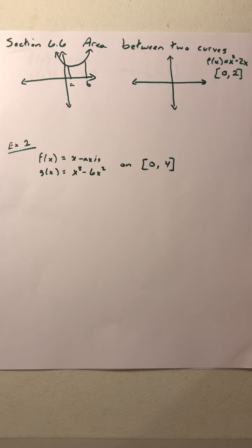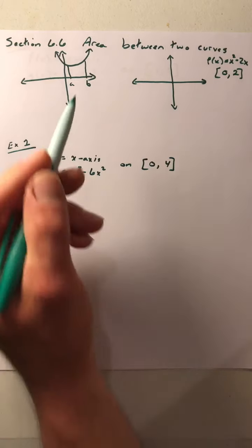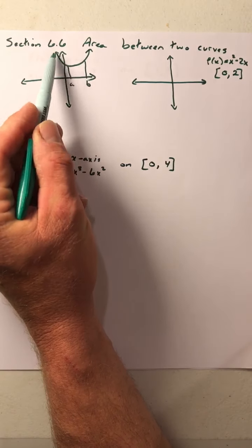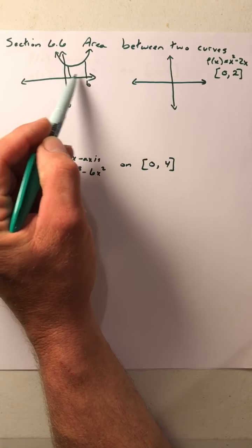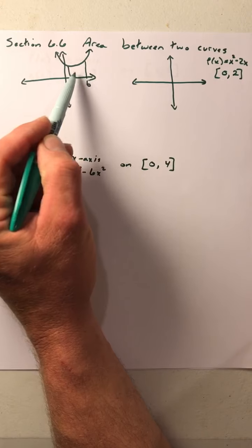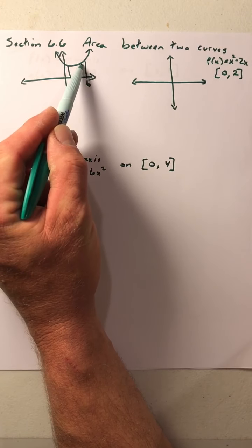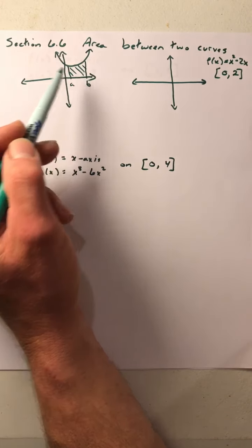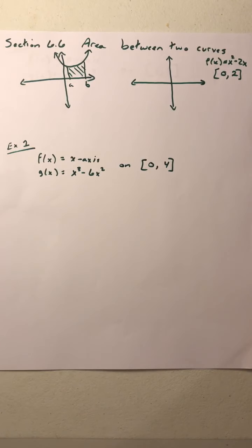We're going to focus today on the x-axis and our graph. Up to this point, we've always seen our graph above the x-axis, and we've always found an area from an a value to a b value. So when we found that area, it was always a positive value. Though if it's below the x-axis, we could actually end up with a negative value.